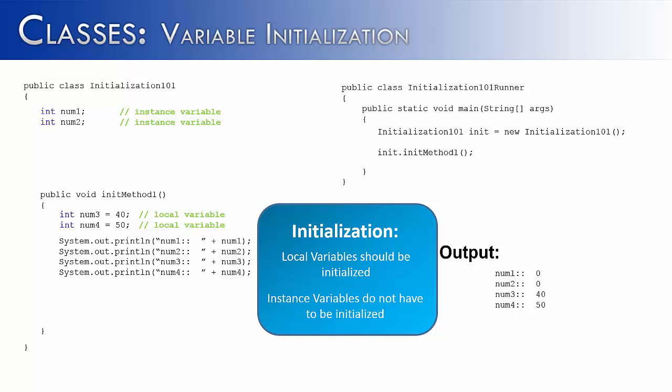Int is not the only data type inside of Java. So what would happen if we created another instance variable, like double num5? Would it give us an error, or would it assign a value? All instance variables are assigned a default value. So for the double data type, it would be 0.0.